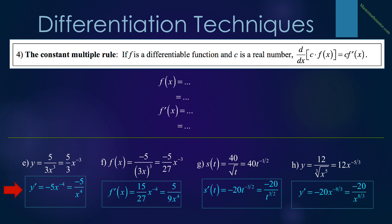A word about notation: many times we have to do some work to get the function ready before applying our rules. When we do that, we must continually write y equals or f of x equals to show it is still the original expression. When we take the derivative, it is important to use the notation y prime equals or f prime of x equals at the transition point. We can then continue writing equals signs to show that this is the derivative, not the function.